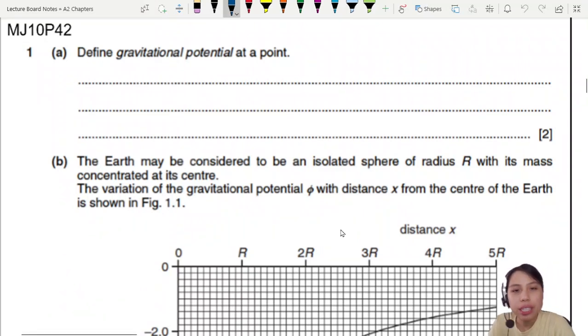Define gravitational potential at a point. This is a question about gravitational potential, Meijun Tan P42.